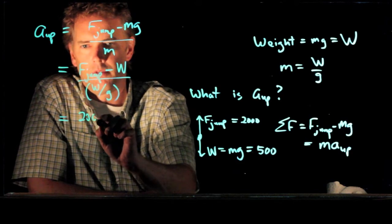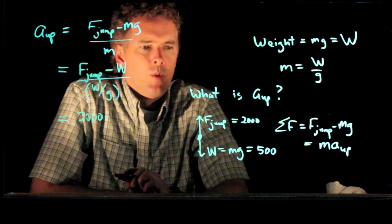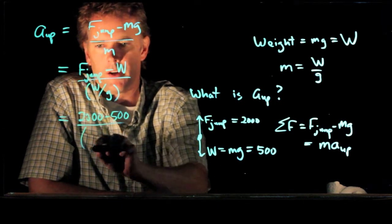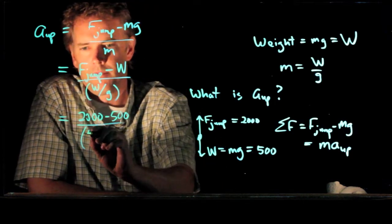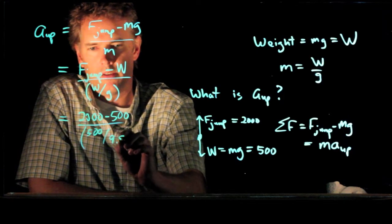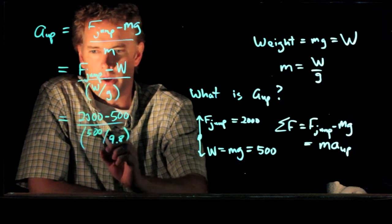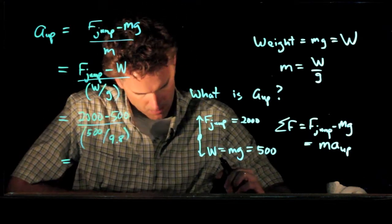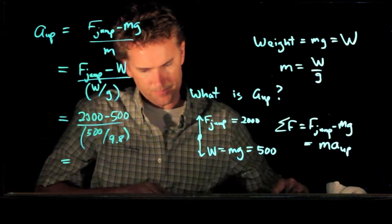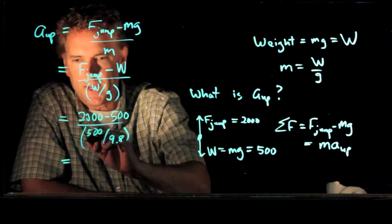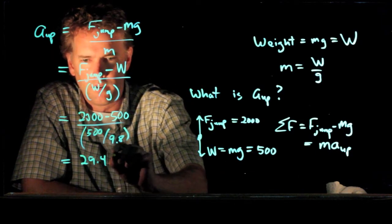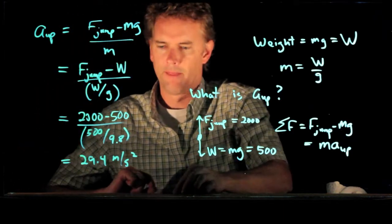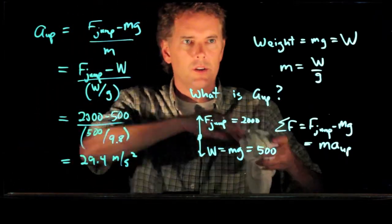F jump was 2,000 newtons. Weight was 500 newtons. We are going to divide by the weight 500 over g, which is 9.8. We are in SI units here. And so we end up with a number that looks like 29.4 meters per second squared. Okay, so that is their acceleration going up.